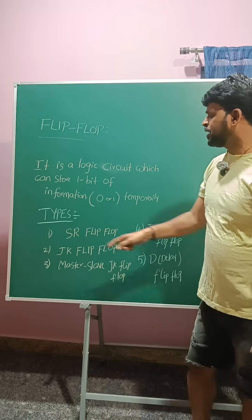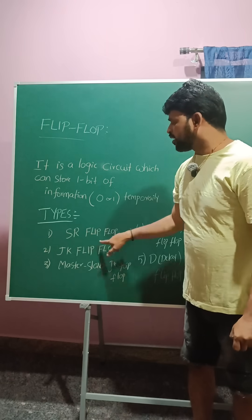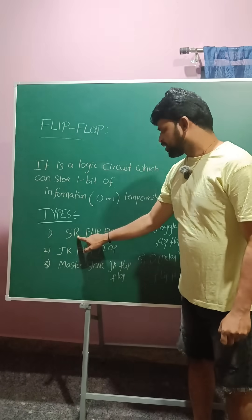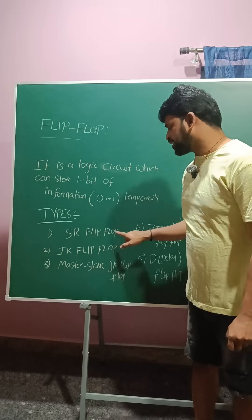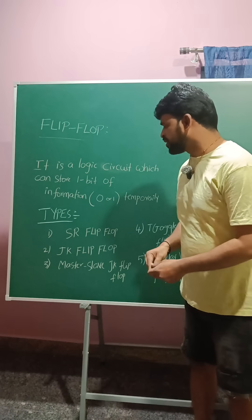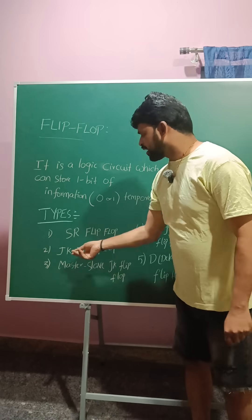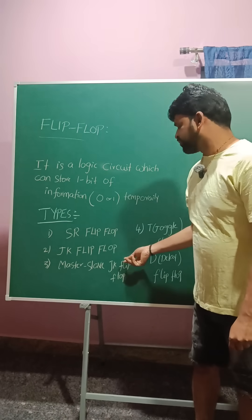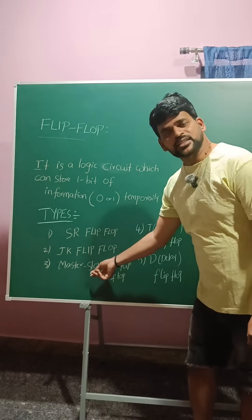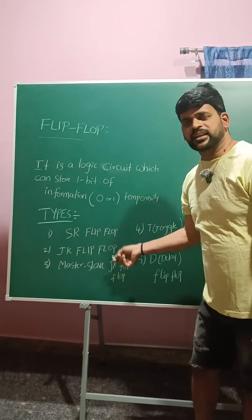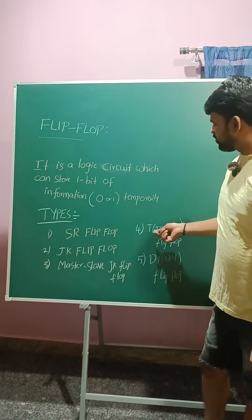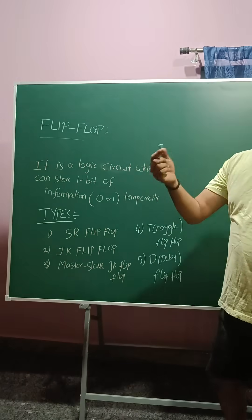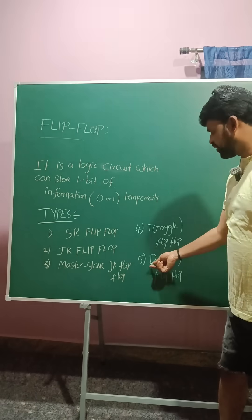The types of flip-flops are: SR flip-flop, where S stands for Set and R stands for Reset; JK flip-flop (Johnson counter flip-flop); Master-Slave JK flip-flop; and T flip-flop, where T stands for Toggle.